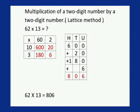Let's take an example of a two-digit number by a two-digit number. 62 multiplied by 13. Let's write its expanded form. 62 is equal to 60 plus 2 and 13 is equal to 10 plus 3. So let's start multiplying.